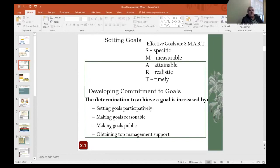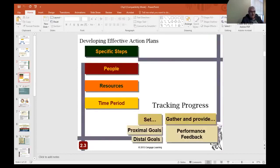As you can see from this slide, for an effective goal, the goal must be specific, measurable, attainable, realistic, and timely. So an action plan is the specific steps, how, who, what, and when for accomplishing a goal, like people, resources, time period.